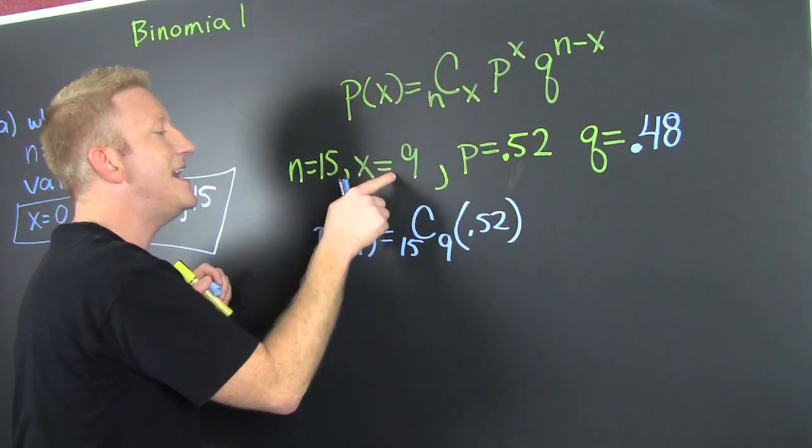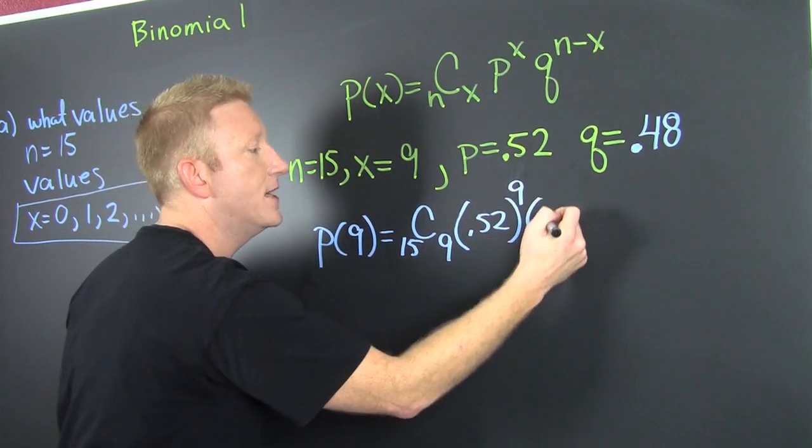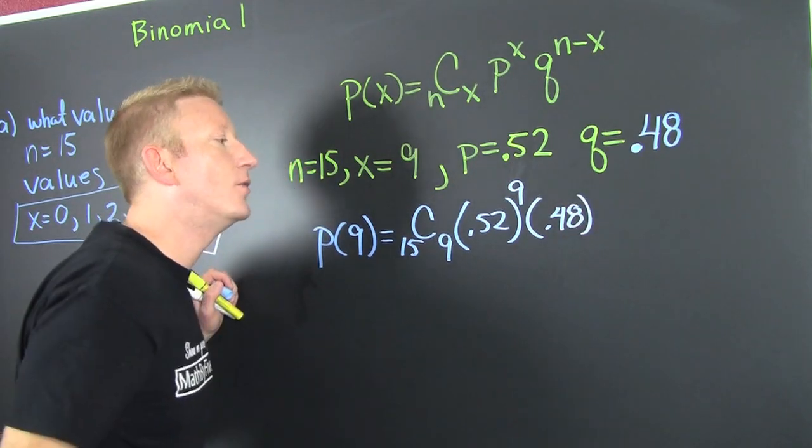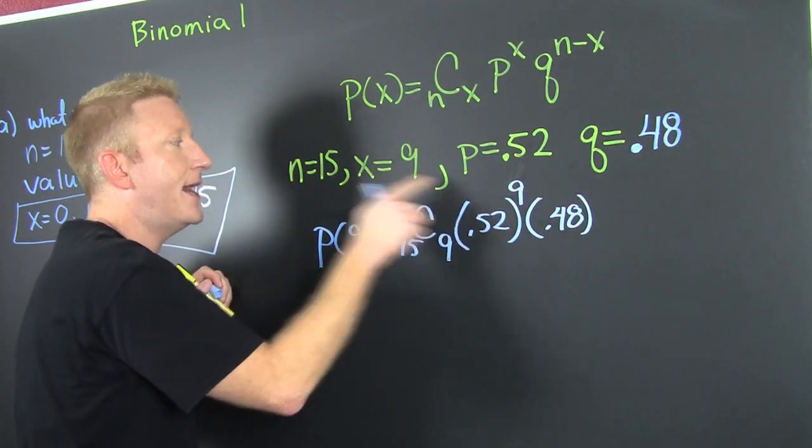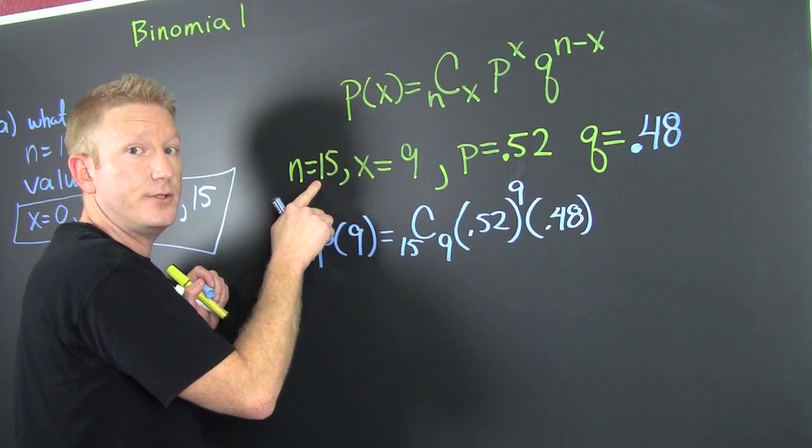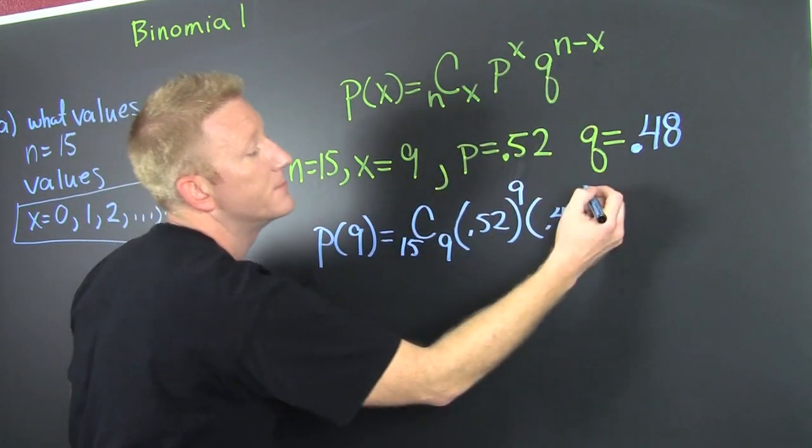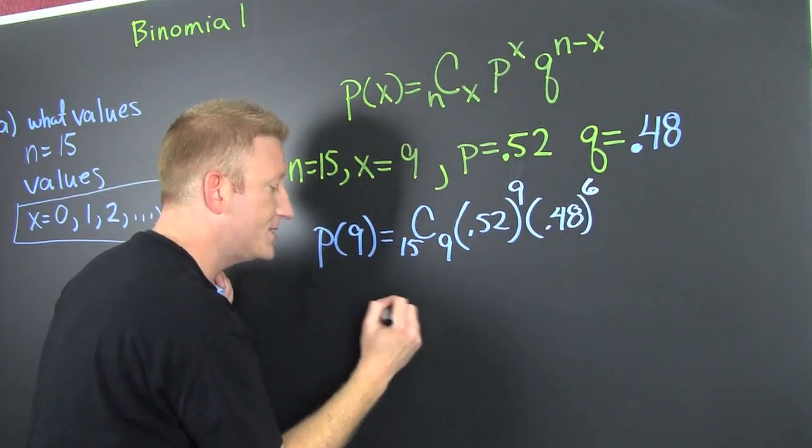So that's 0.52 to the 9. Then that's 0.48. Wait, what do I add to 9 to get 15? Because when I add the two, they need to add to 15. That's where the 15 minus 9 comes from. And that's where I get my 6.